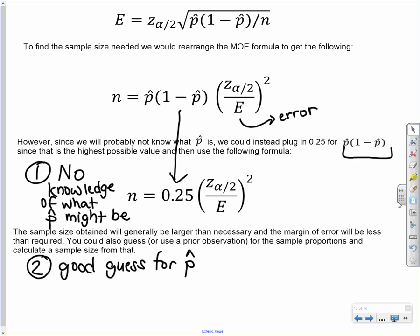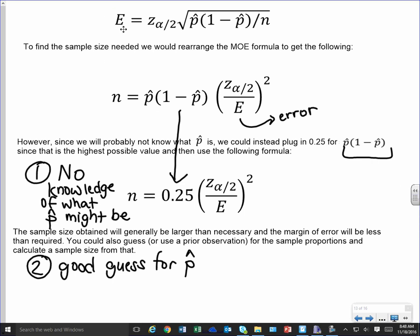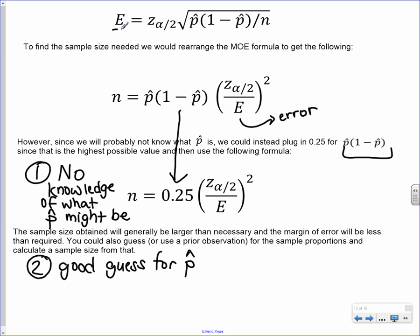One other thing we can do with this margin of error formula. So this is our margin of error. Usually it's either denoted with the E or with margin of error. Sometimes it would be M-O-E instead. But typically in our formulas, if we just want to use one letter, we'll use the E to denote it. And so error is equal to that Z alpha half, which we get from our level of confidence, times this, which is our standard deviation of the sampling distribution that we're looking at. So it's the square root of p-hat times 1 minus p-hat over n.